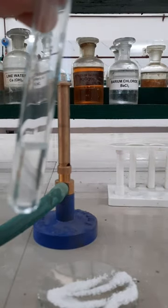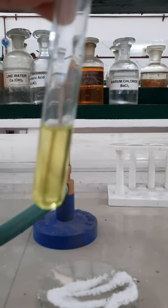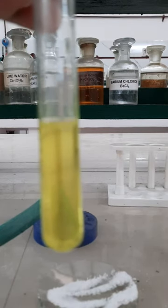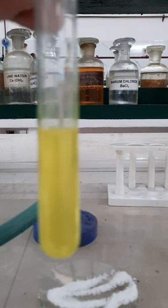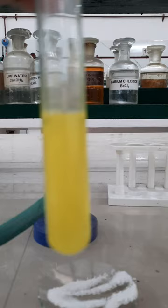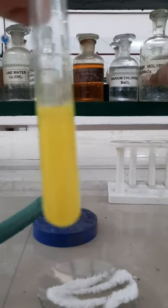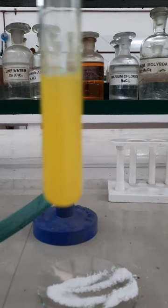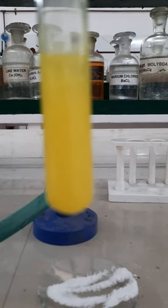Record the observation. A yellow colored precipitate will be obtained. This precipitate is due to the formation of ammonium phosphomolybdate and this will confirm the presence of phosphate in the given salt.